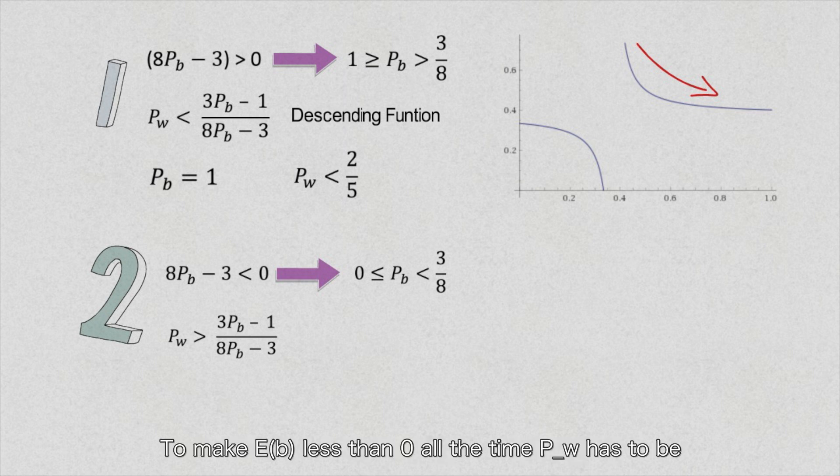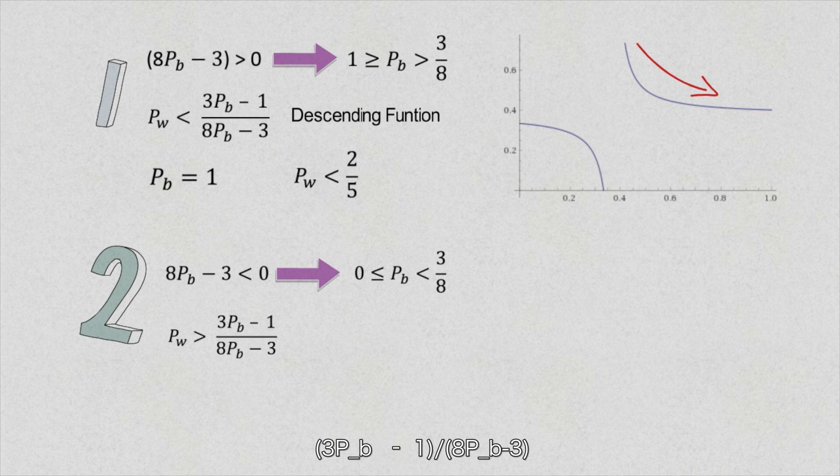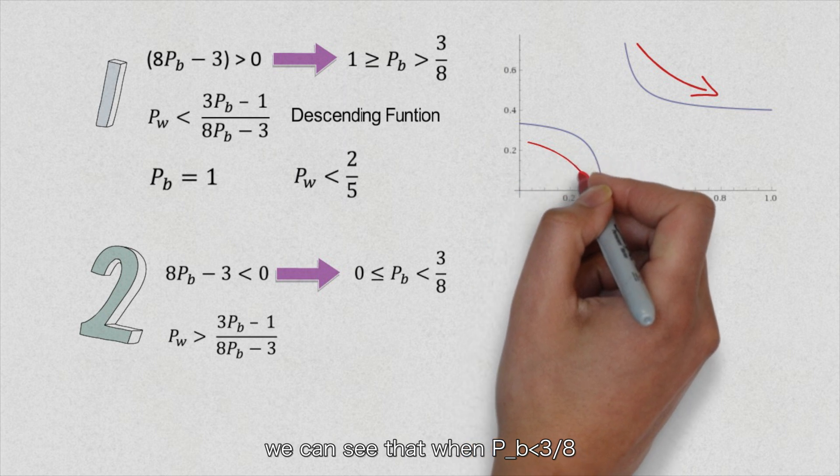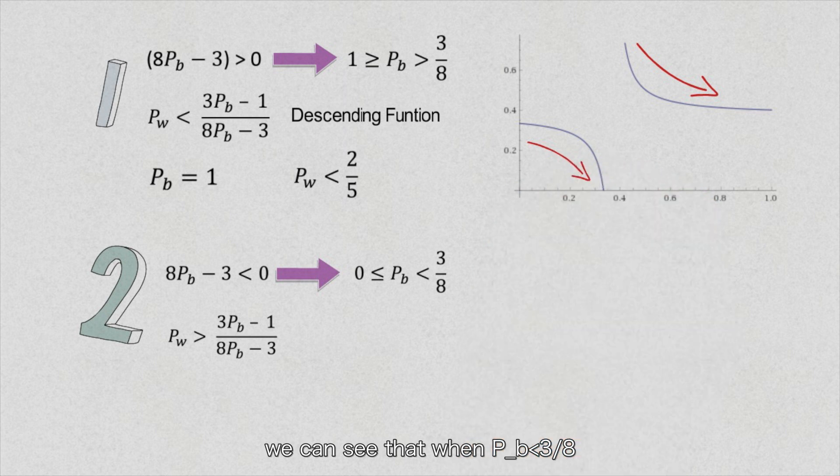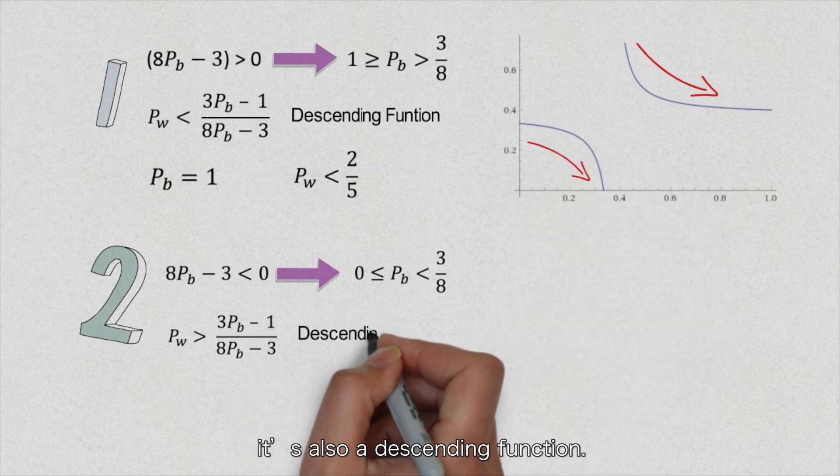To make the expectation of b less than 0 all the time, P_w has to be larger than the maximum value of the function 3P_b minus 1 over 8P_b minus 3. Again, from this function image, we can see that when P_b is less than 3 over 8, it's also a descending function.